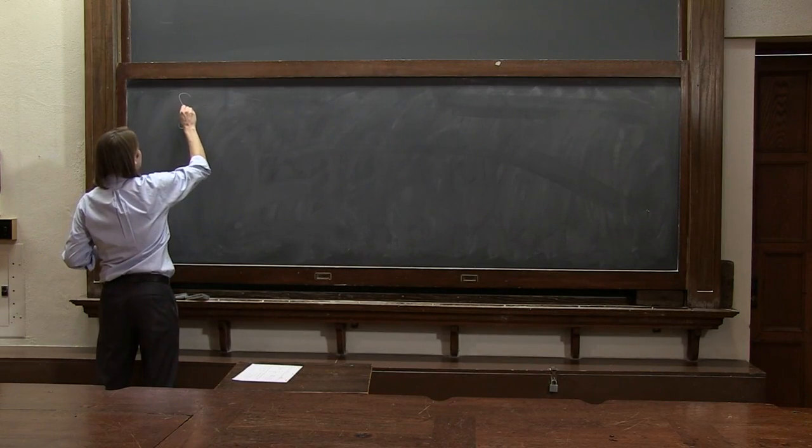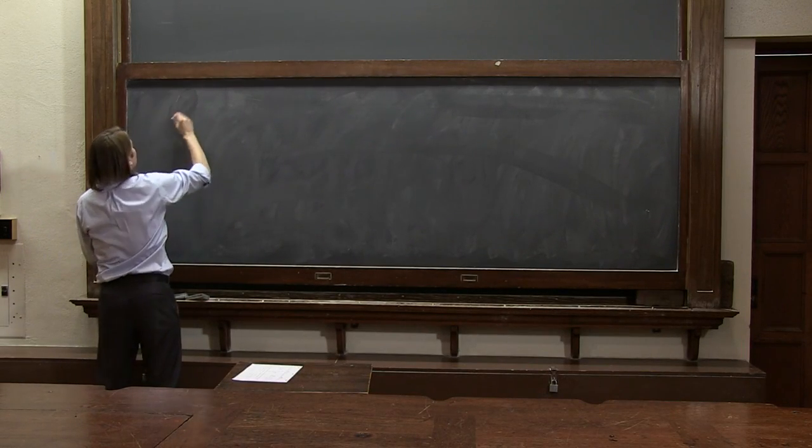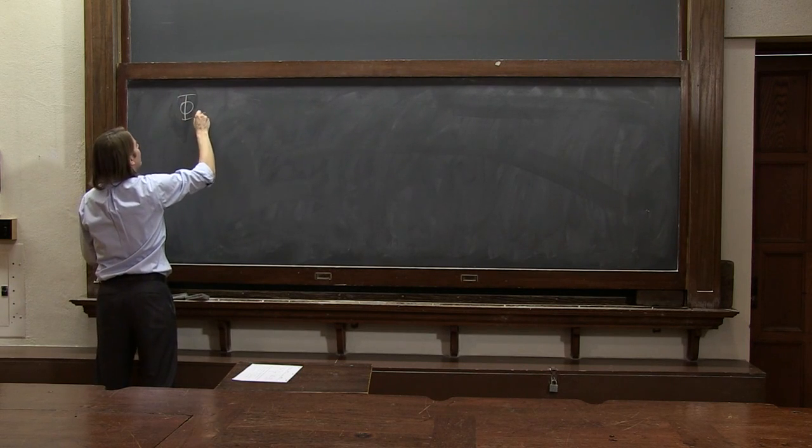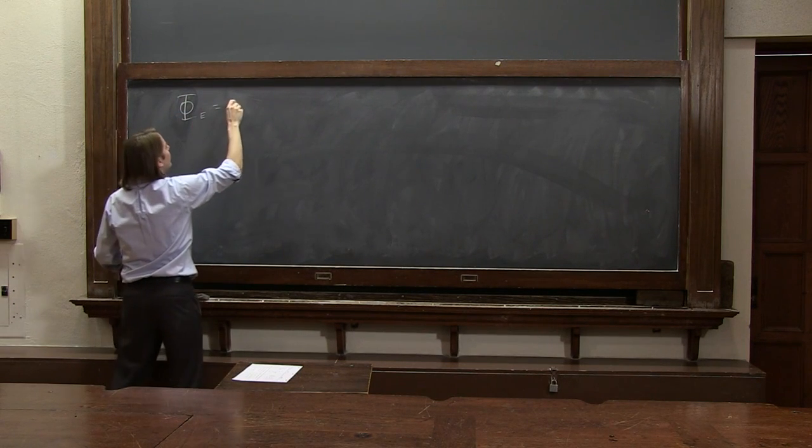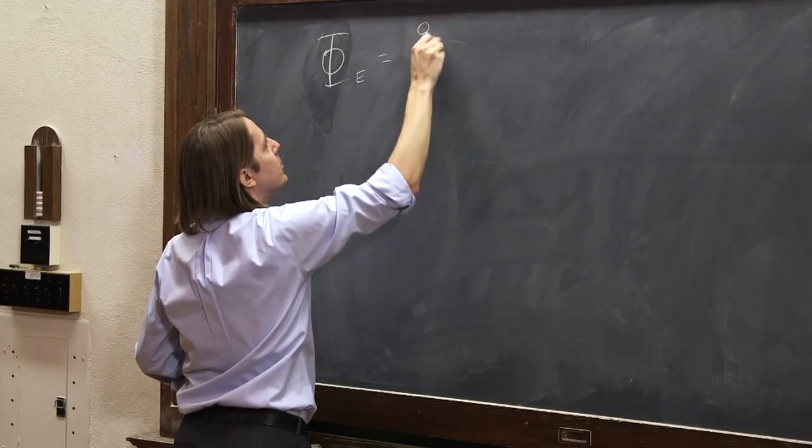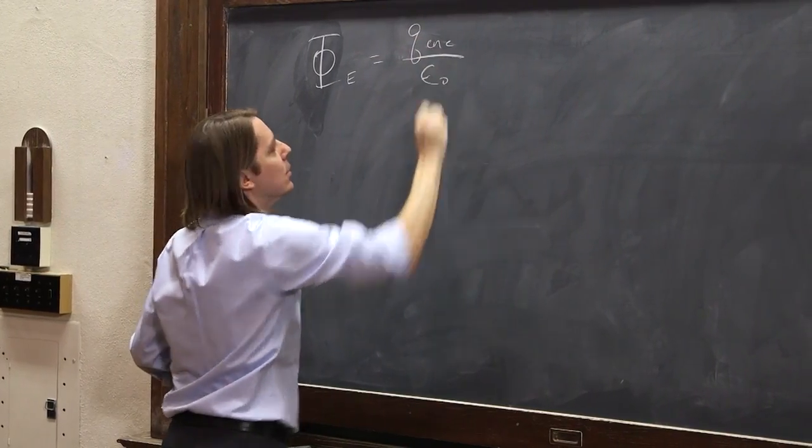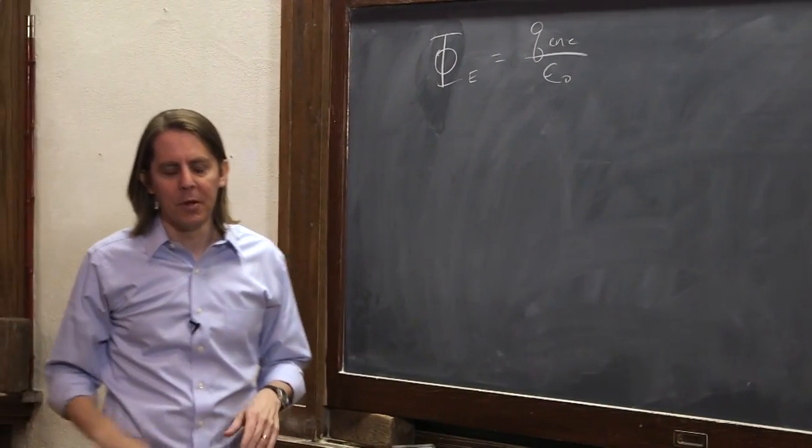Gauss's law. Let's write it again. You can never get enough. Gauss's law. Let's write it in terms of the flux. The flux through the closed surface will be the charge enclosed over epsilon naught. Gauss's law.